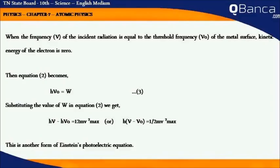we get hν − hν₀ = ½mv²_max, or h(ν − ν₀) = ½mv²_max. This is another form of Einstein's photoelectric equation.